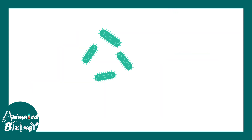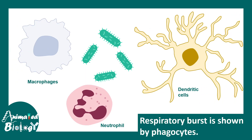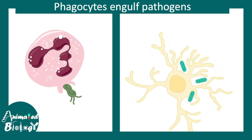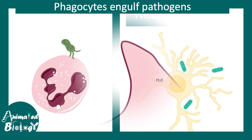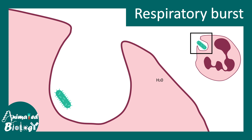Some pathogens have invaded our body, and the first line of defense — innate immune cells like macrophages, neutrophils, and dendritic cells — will try to engulf these pathogens. After engulfing the pathogens, we are looking at a portion of the neutrophil and the phagosome, which has engulfed the bacteria. Oxygen is taken in and rapidly converted to reactive oxygen species by the NADPH oxidase enzyme.